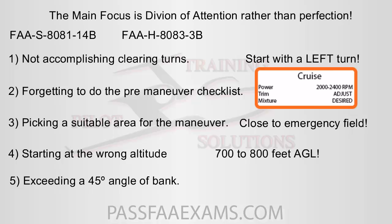During the ground reference maneuvers, it is very important not to exceed a bank of 45 degrees, as that is considered a high performance maneuver, and for those the PTS states you should be above 1,500 feet. If you are forced to bank more than 45 degrees, it is either because the wind is too strong — which is doubtful, as you would probably not have initiated the checkride with those winds — or the examiner could fail you right off the bat for bad aeronautical decision making.